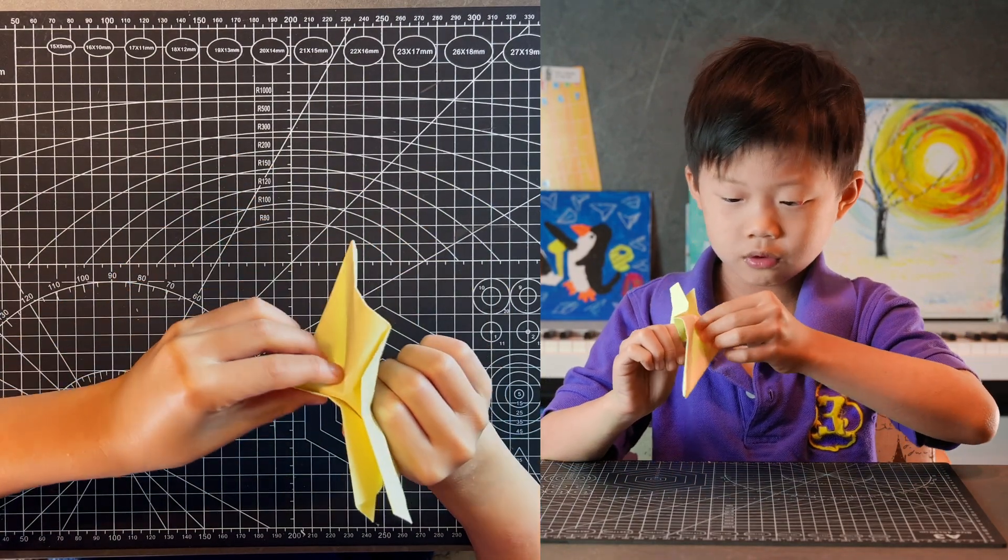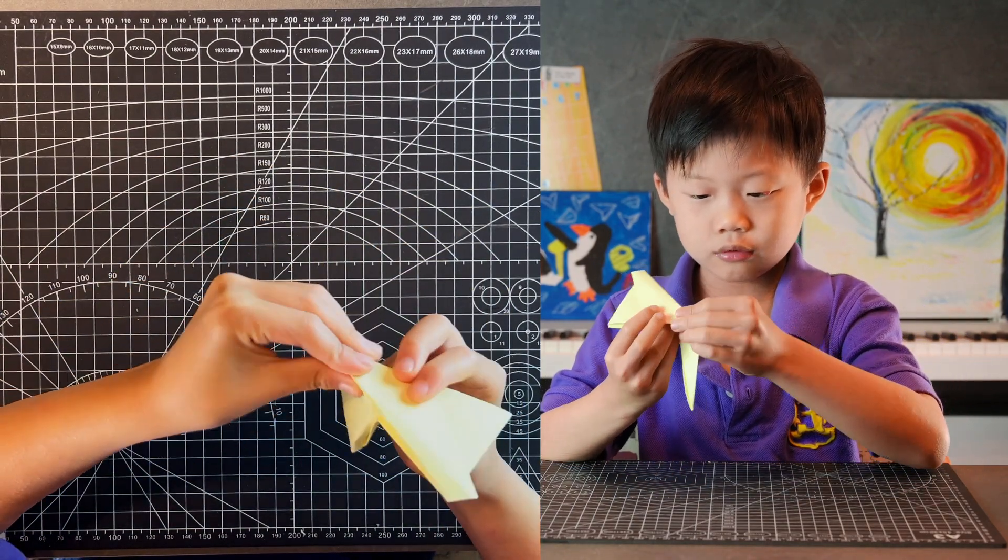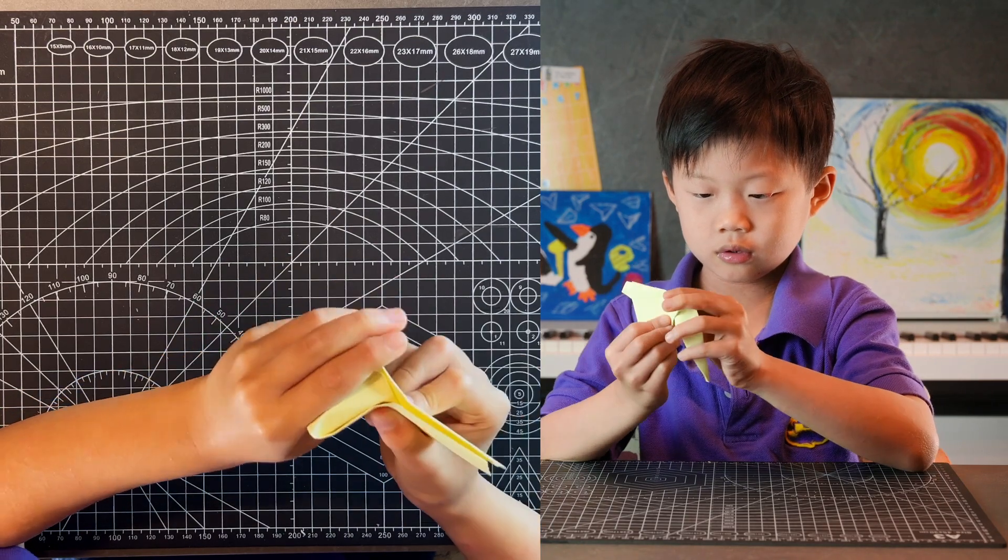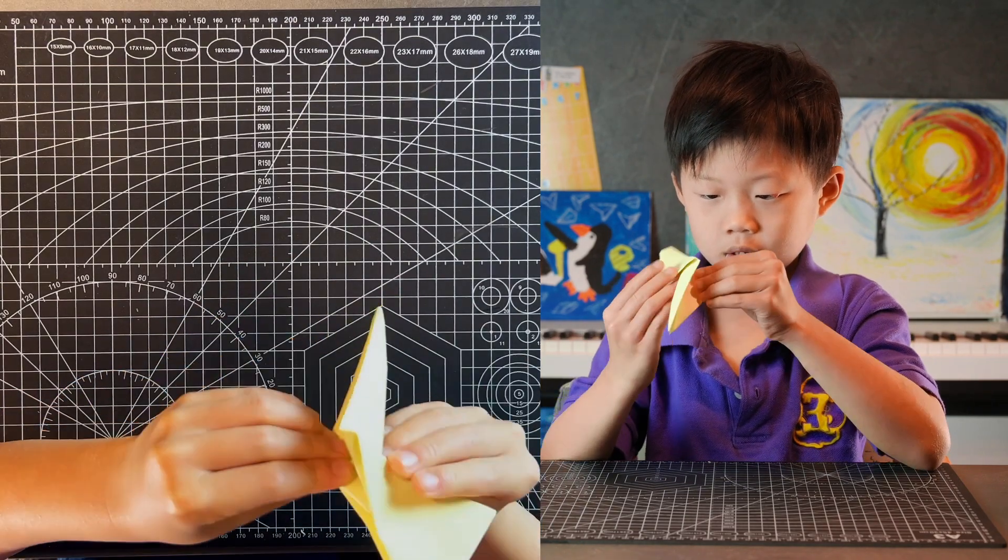And then kind of invert this whole section. It's kind of a tricky fold. Fold it in half again.